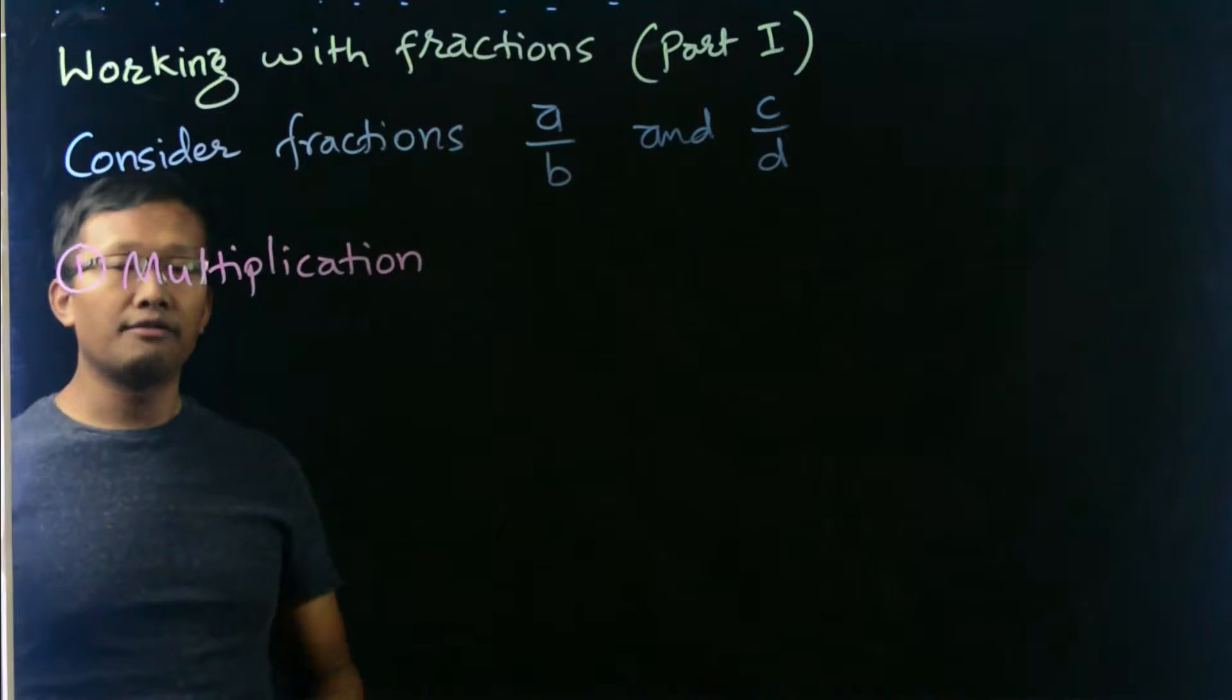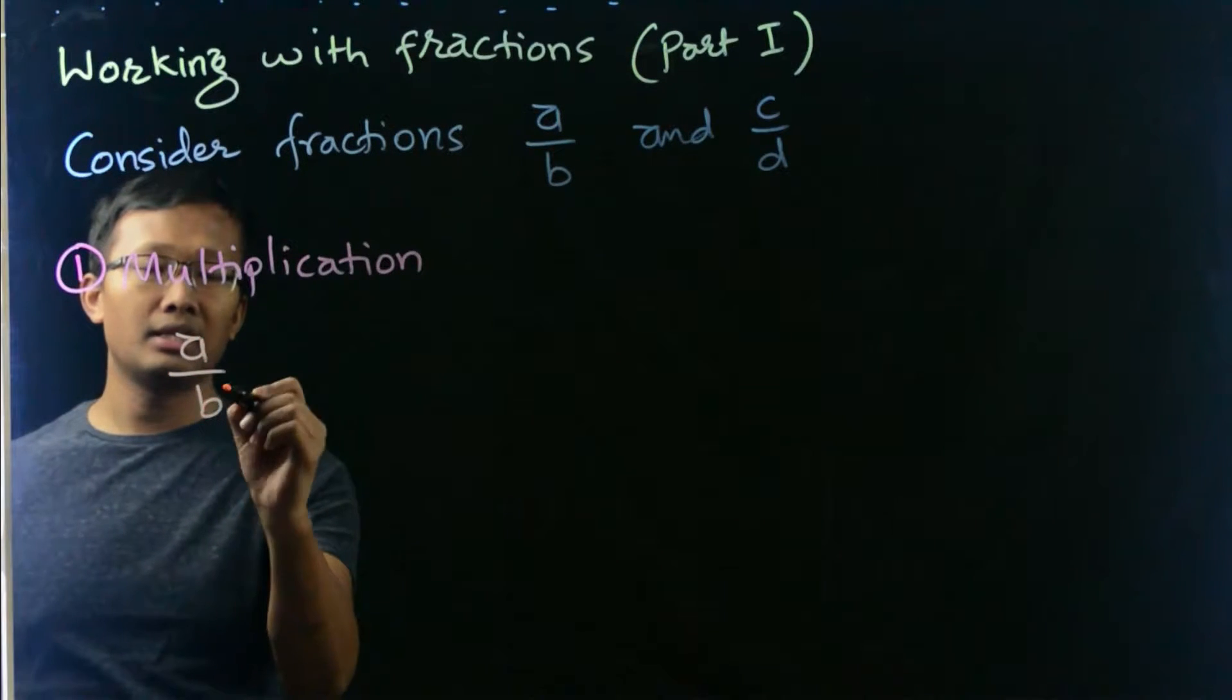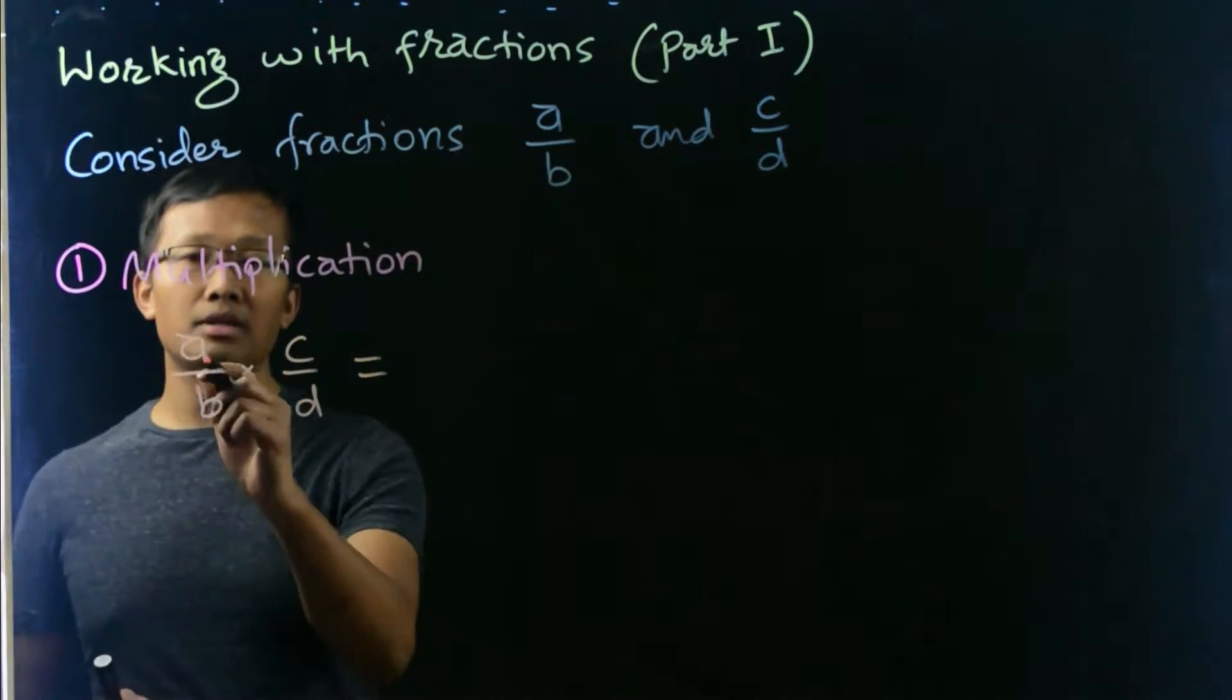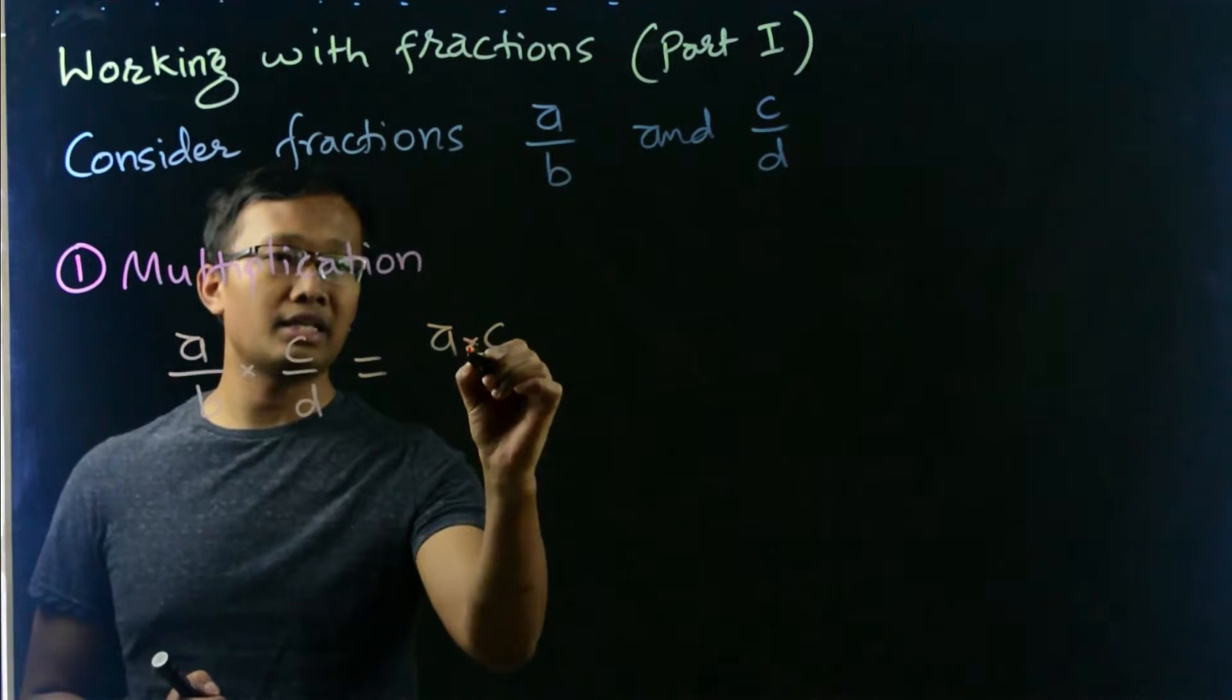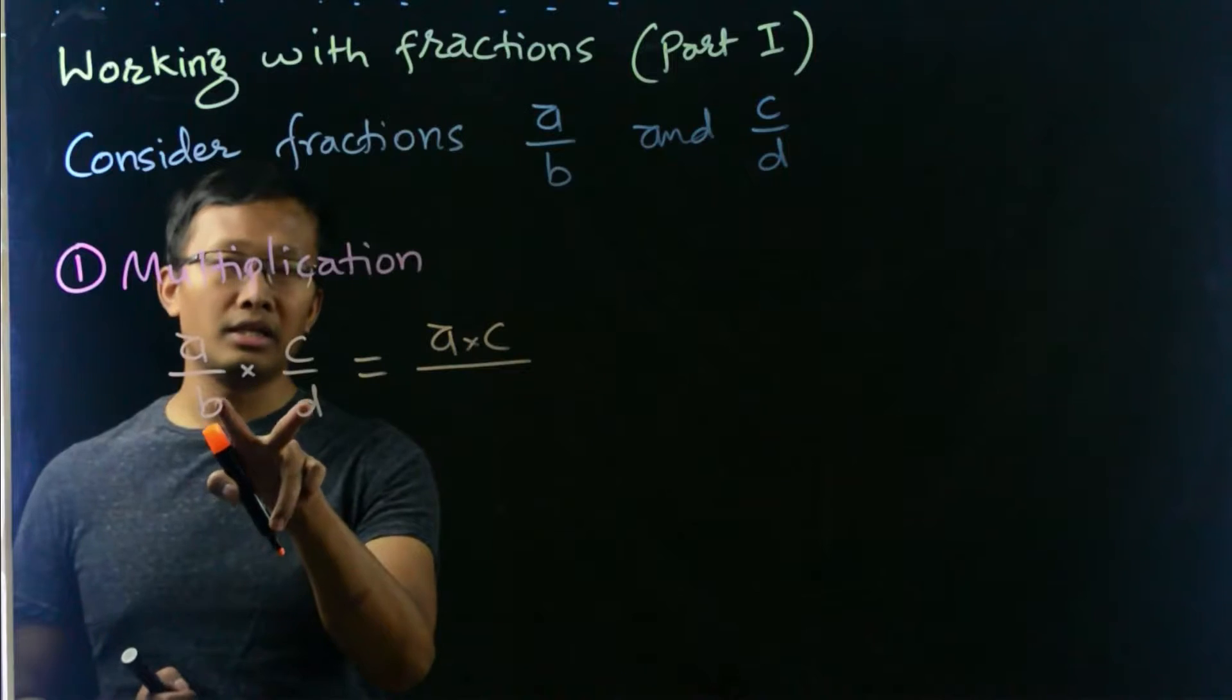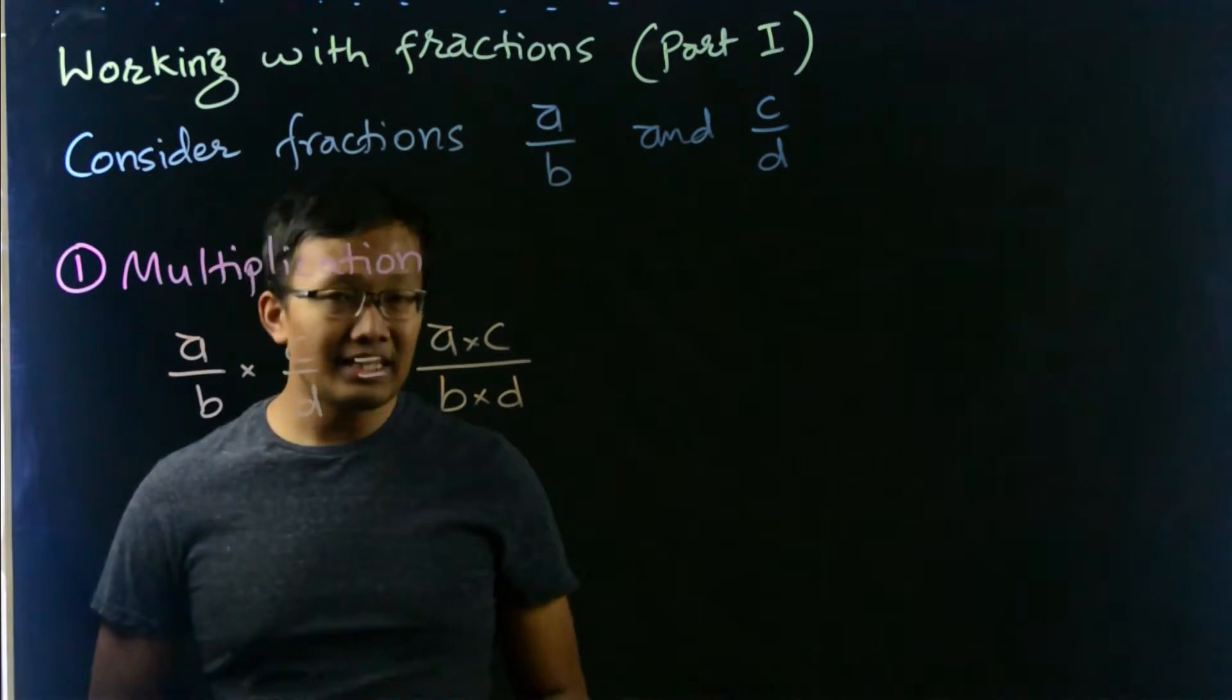If we want to multiply two fractions, a divided by b times c divided by d, we multiply the numbers in the numerator: a times c, divided by multiply the numbers in the denominator: b times d.